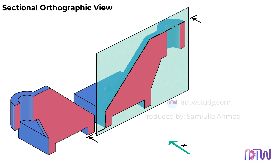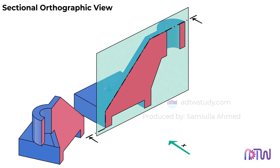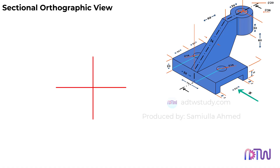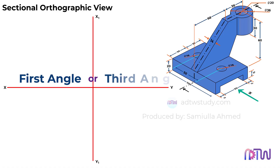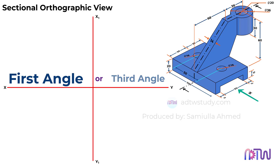To draw the sectional orthographic view of this object, we first need to have its orthographic views. So, let's start by drawing the orthographic projections. If the projection method — that is, first angle or third angle — is not specified, we'll assume the first angle projection method for this example.